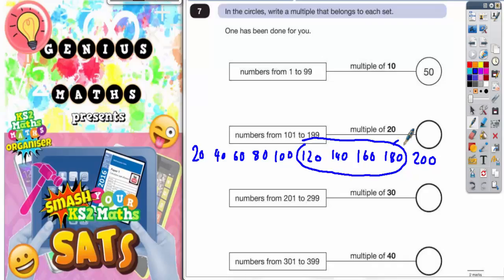We could do the same for multiples of 30, so we go 30, 60, 90, 120, 150, 180, 210, 240, 270, 300. Again, this time we're looking for anything between 201 and 299, so we could have any of these three numbers in this answer box.